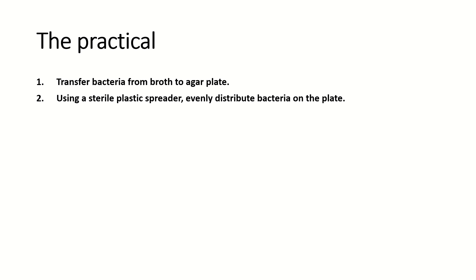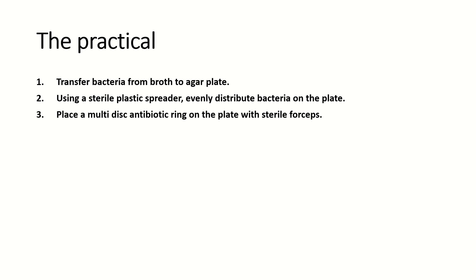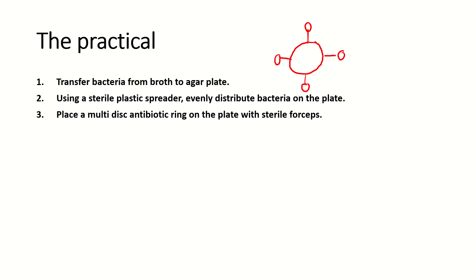Obviously, if your spreader is plastic, it wouldn't be ideal to pass it through the Bunsen burner flame before distributing the bacteria, because it will melt. Then you place a multi-disc antibiotic ring on the plate with sterile forceps. To sterilise the forceps, you would again pass them through the Bunsen burner flame. The multi-disc antibiotic ring looks like a ring with different strips coming out of it with discs on the end. Each one of these discs will have a different antibiotic, so that you can investigate the effect of the different antibiotics on the bacterial growth on the plate.